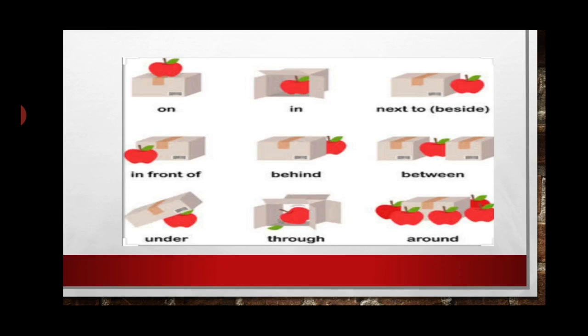Next, the apple is next to the box, or we can say the apple is beside the box. Then the apple is in front of the box, the apple is behind the box, the apple is between two boxes, the apple is under the box, the apple is through the box, and the apples are around the box. All of these show the position of the apple as well as the position of the box.